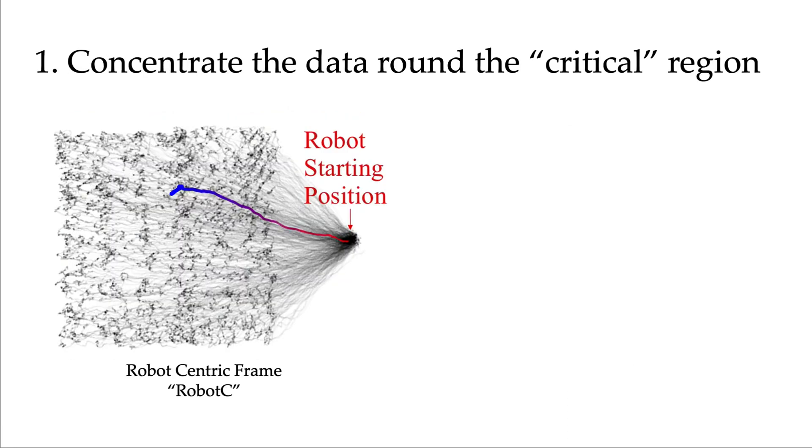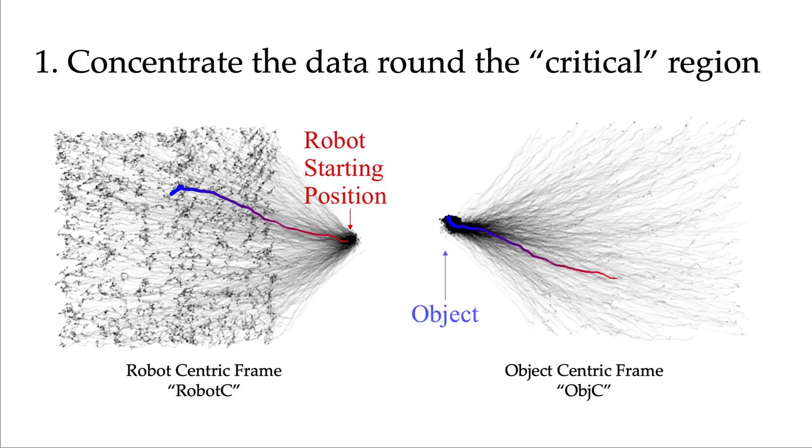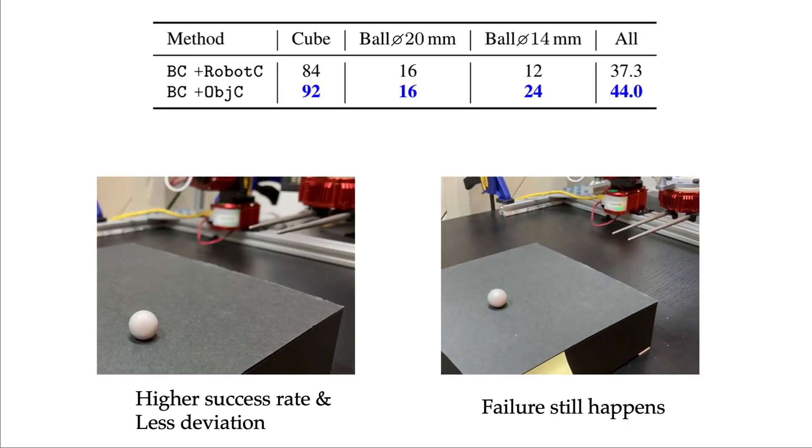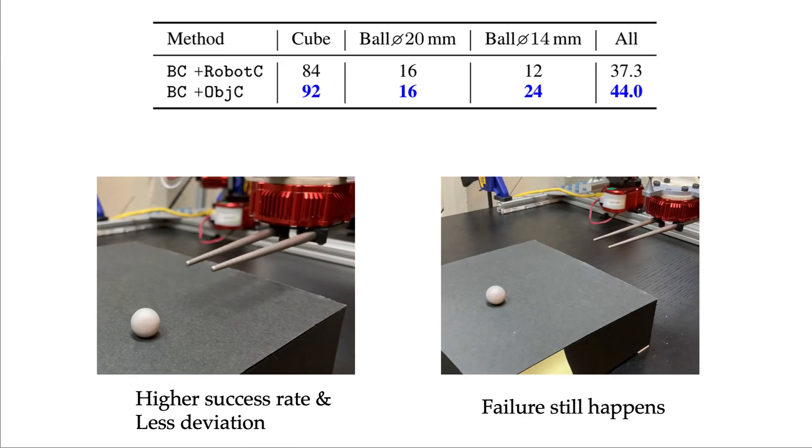To remedy, we propose to first transform the data to a different frame. Here we would transform from this robot-centric frame to the object-centric frame. After the transformation, we know that the data support is denser around the object. This is a critical region for grasping task success. When applying this on a real robot, we observe that the transformation improves the agent's success rate.